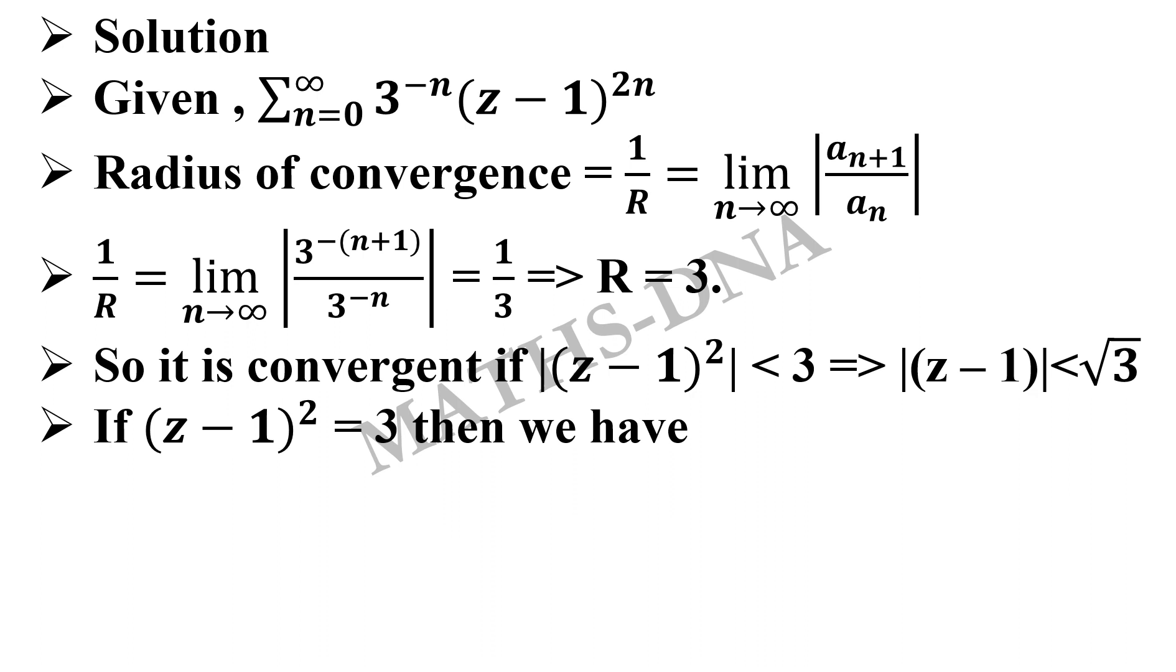So putting the value z minus 1 whole square equals to 3 in the given series, we get summation n running from 0 to infinity 3 raised to minus n into 3 raised to n, which is equal to summation n running from 0 to infinity 1, and which is divergent.